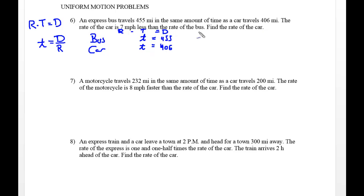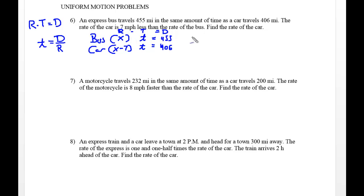The rate of the car is 7 miles per hour less than the rate of the bus, so the car is going slower. We designate the car as x minus 7 and the bus as x. You could also say the bus is x plus 7 and the car is x — that would still denote that the car is 7 less than the rate of the bus. Most students would write it the first way.